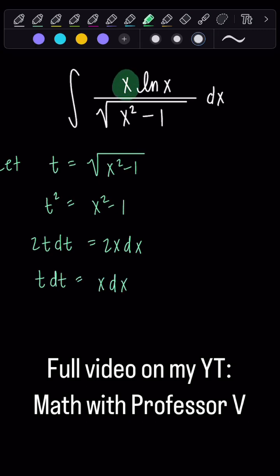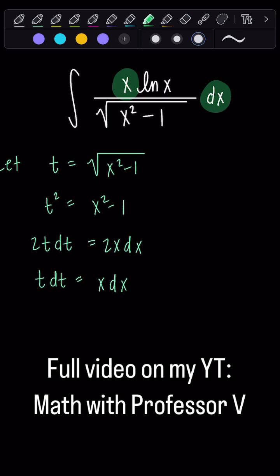which I'm happy about because look, here's x dx, great. And then this square root of x squared minus 1, that's just my t.